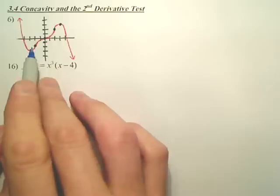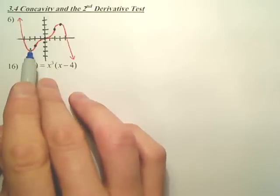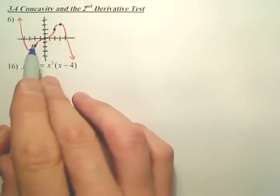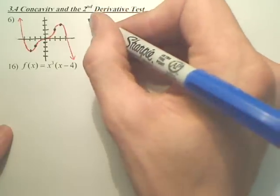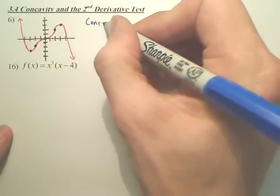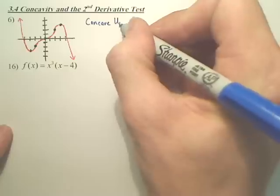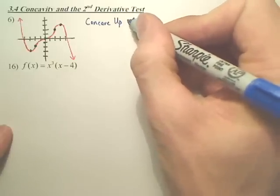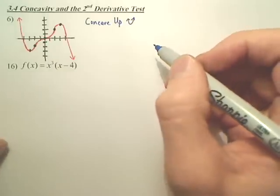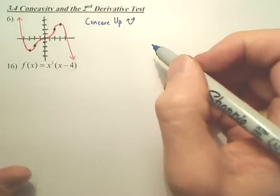Concavity and the second derivative test. For this one, we want to find the intervals where it's concave up and concave down. Concave up is happy. So looking at the graph, where is our graph happy?